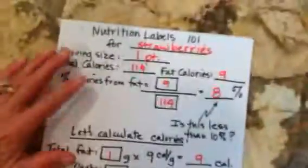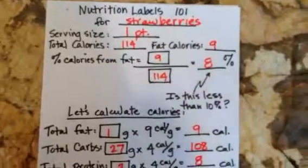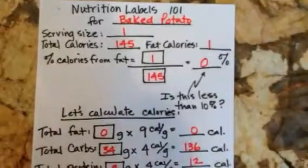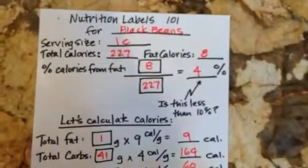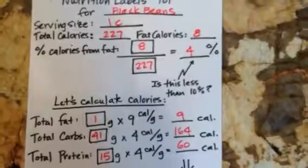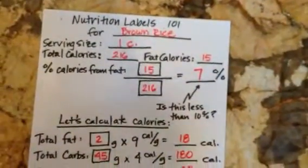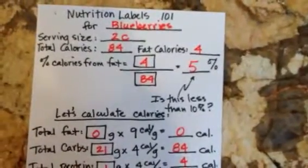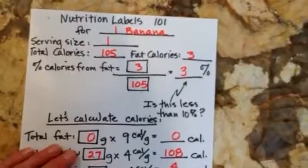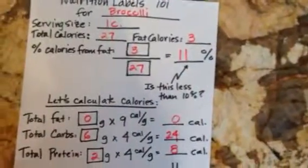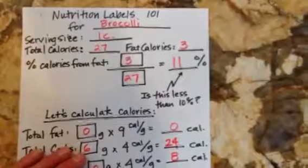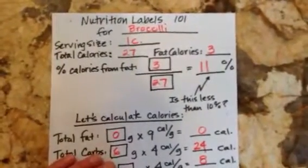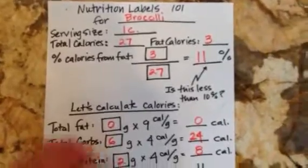Now let's go to the healthier foods to show you that you can eat a ton of them and not worry about fat. A pint of strawberries — 8% fat. A baked potato — 0% fat. A cup of black beans cooked — 4%. A cup of brown rice — 7%. Two cups of blueberries — 5%. One banana — 3%. Broccoli is a little bit higher in fat, but we know how many other good things are in broccoli, so eat up.